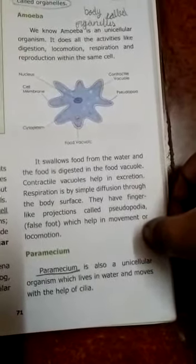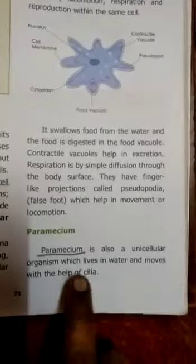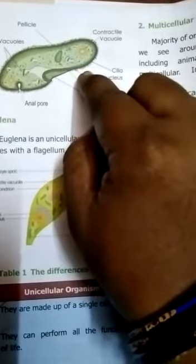Next is paramecium. This is also a unicellular organism but has a different locomotory organ. Looking at its structure, paramecium has a slipper-like shape. It does not have pseudopodia; instead, it has small hair-like structures called cilia. It also has a nucleus, cell membrane, and contractile vacuole — the same internal structures are present.